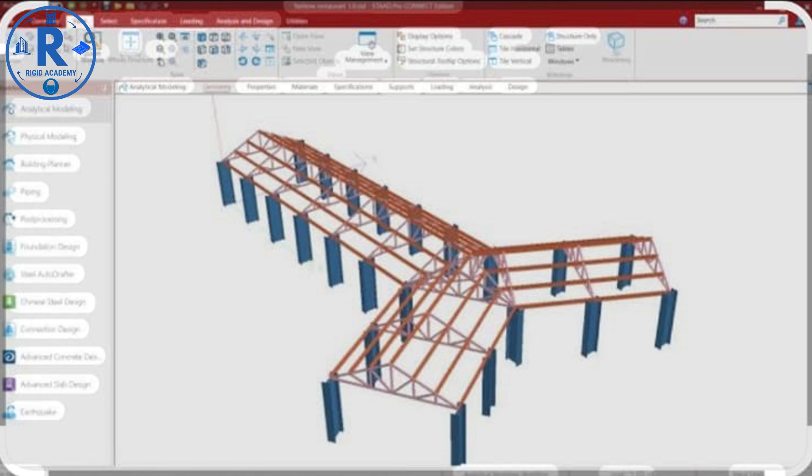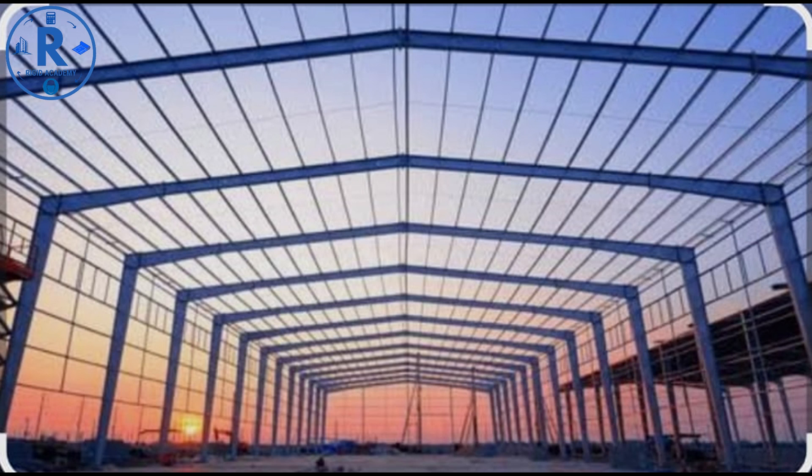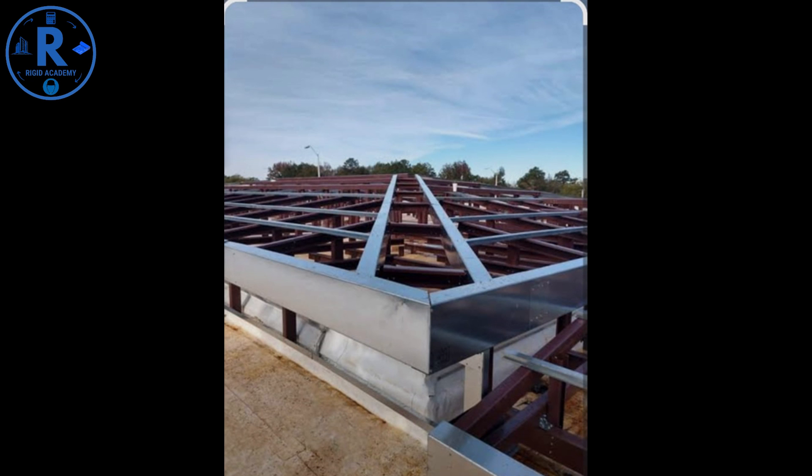Steps in analysis: model the frame with correct member properties, apply all relevant loads, run analysis for bending moments, shear forces and deflections, and optimize member sizes to meet code requirements. At Rigid Academy, we recommend SAP 2000 for its flexibility and user-friendly interface, especially for steel roof projects.